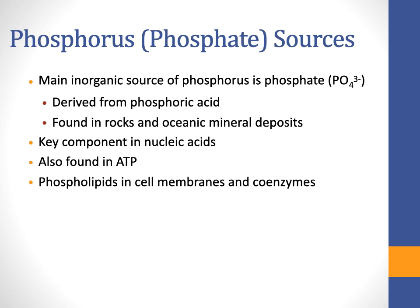Phosphate is important for organisms, often found in their environment and soil. It's a key component of nucleic acids and is found in ATP. ATP has three phosphate groups, so you need enough phosphate to create ATP. The precursor ADP has two phosphate groups — you add a phosphate group to store energy as ATP. Phosphate is also found in phospholipids in cell membranes and can act as a coenzyme, allowing enzymes to become activated.